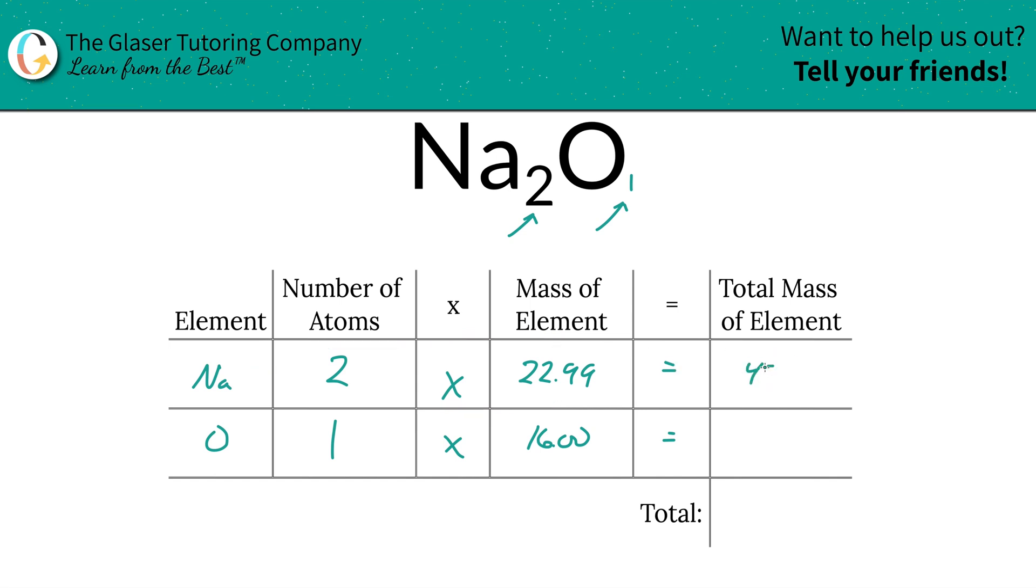And then we're simply going to multiply that row across to find the total mass of the element, and 45.98. Then when you add this column up, that's going to help you find the total mass of the entire compound, so 61.98. And that was the first step of the process, right? We had to find that total mass of the compound, which we did.